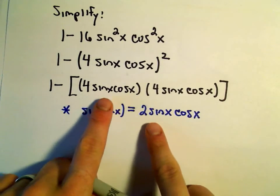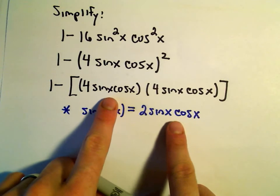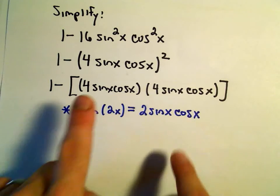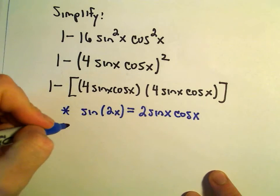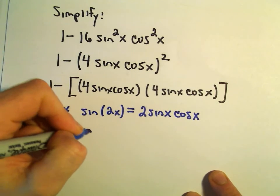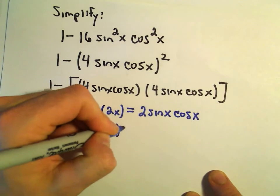Well, we don't have a 2 sine x cosine x in the parentheses. We have a 4 sine x times cosine x. But if I multiply both sides by 2, so if I multiply both sides by 2...